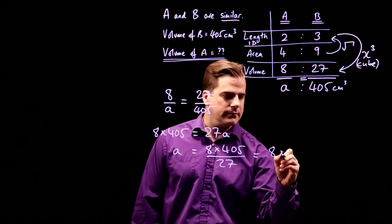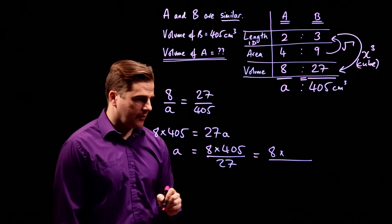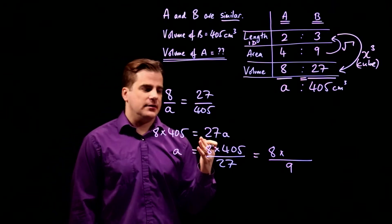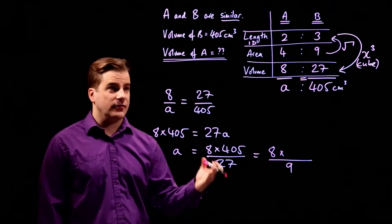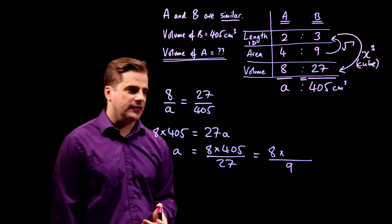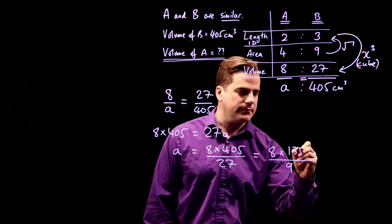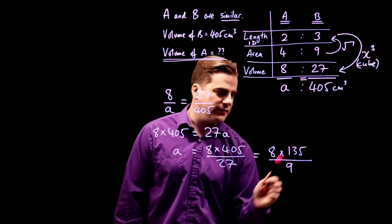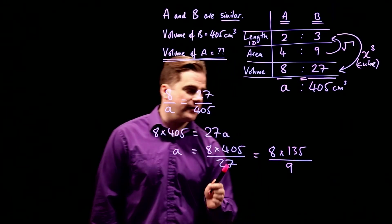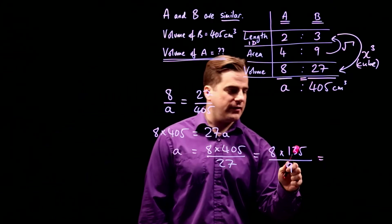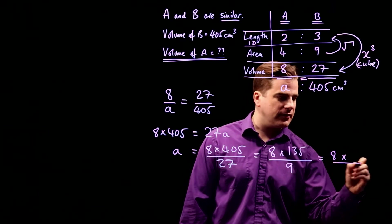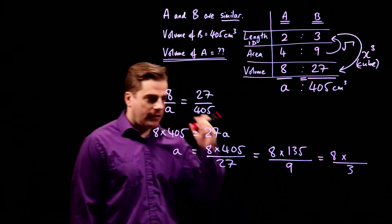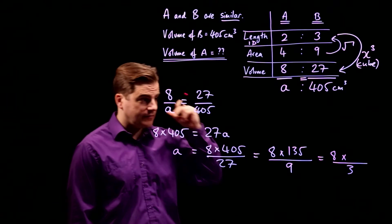So, well, 27 divided by 3 is 9. 3 into 405 is going to be, well, 100 times 3 is 300. That leaves 105. And 35 times 3 is 105. So it's 135. Slightly better. Same thing again. Is this divisible by 3? 1 plus 3 is 4 plus 5 is 9. Yes, it is. So we divide that and that by 3 again. And we get 8 times something over, well, 9 divided by 3 is 3. 3 into 1, 3, 5. 3 into 120 is 40. That leaves 15. So it's 45.